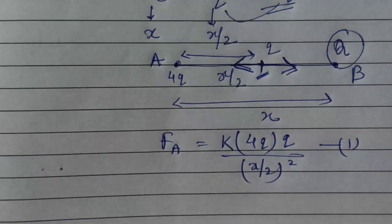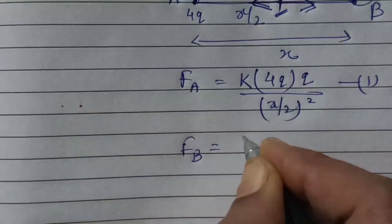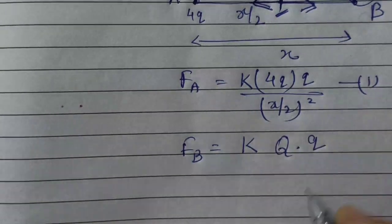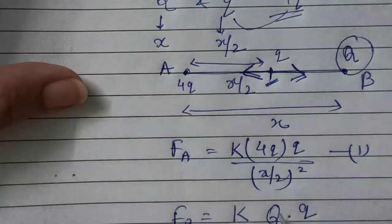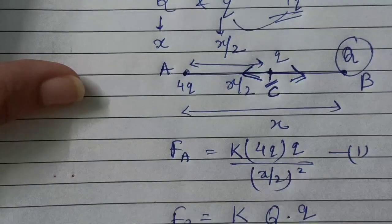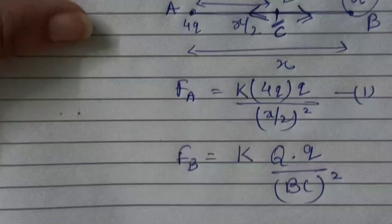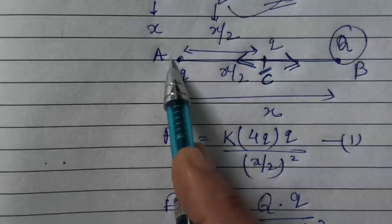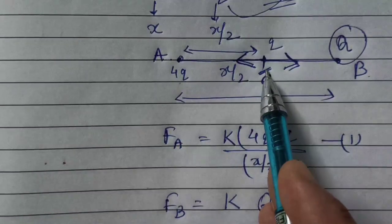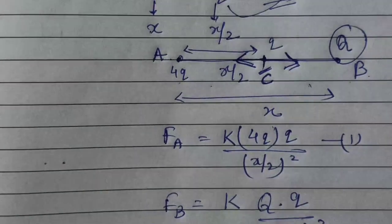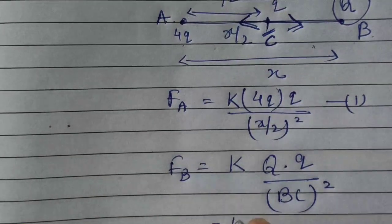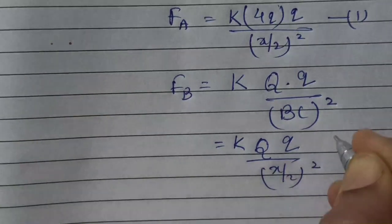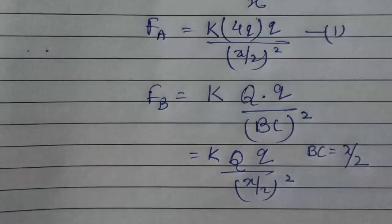Now let us talk about charge q and capital Q, which we call FB. Let me call small q's position C. We do not know the distance BC. But we know total distance is x, and from here it is x by 2, so remaining BC is x minus x by 2, which is x by 2. So FB = k·Q·q / (x/2)².